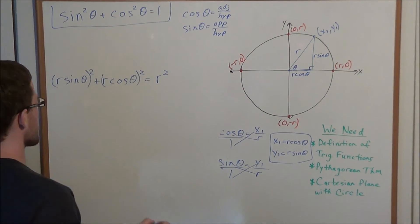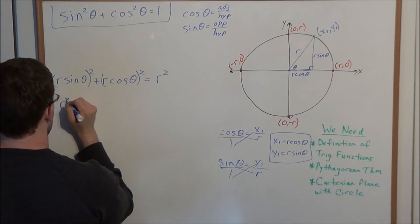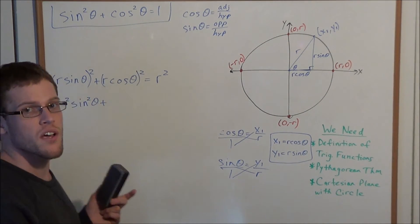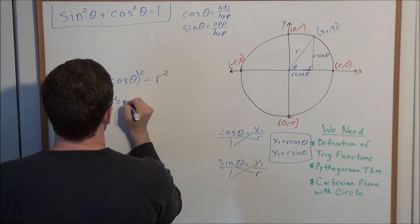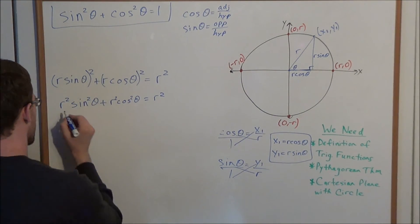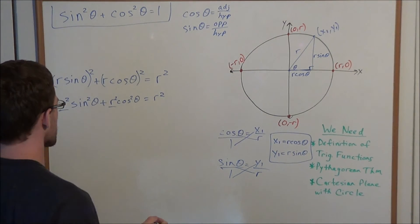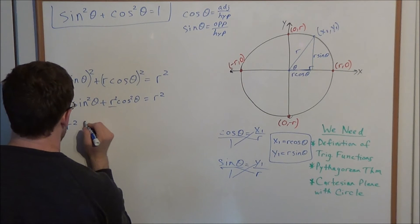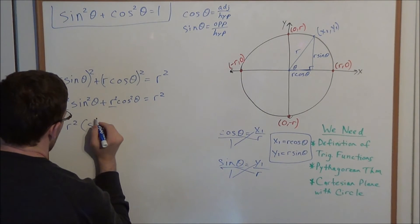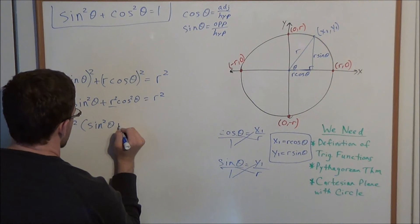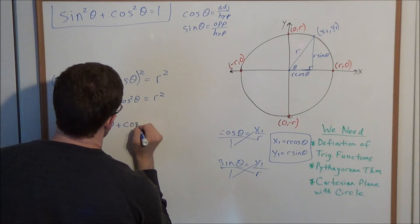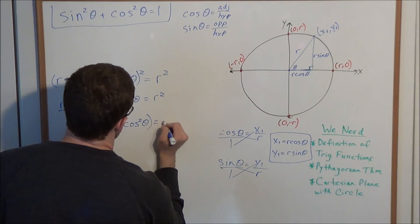Now let's simplify the left-hand side. r sine theta times r sine theta is r² sine² theta, and r cosine theta squared is r² cosine² theta, so the equation becomes r² sine² theta plus r² cosine² theta equals r². On the left-hand side we have a common factor of r², so we factor it out, leaving sine² theta plus cosine² theta, all still equal to r².